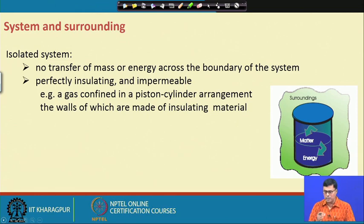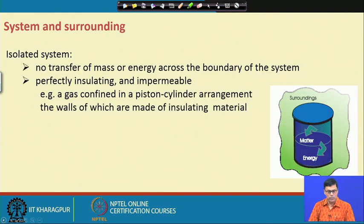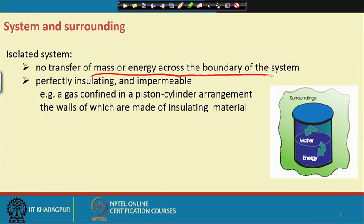We have three different types of systems: isolated system, open system, and closed system. An isolated system means there is no transfer of mass or energy across the boundary of the system. There is no energy and mass transfer taking place, so we call it an isolated system. It is perfectly insulated and impermeable — for example, a gas confined in a piston-cylinder whose walls are made of insulating material.